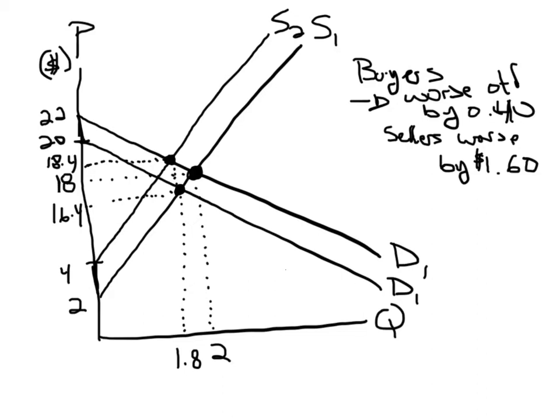So you see that it doesn't really matter who sends the tax to the government. The reduction in quantity is the same, but also effectively the burden on the buyers and the sellers is also the same.